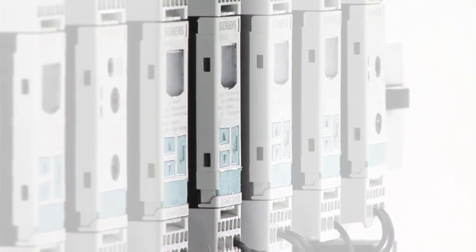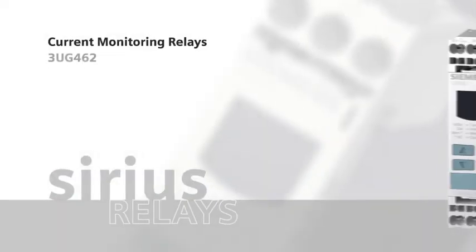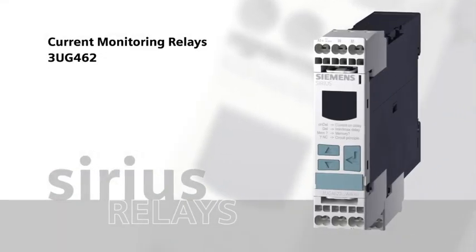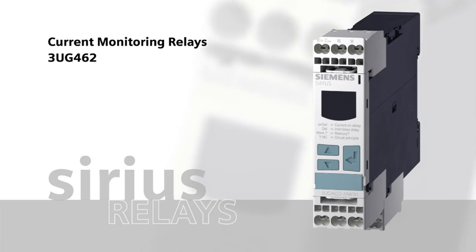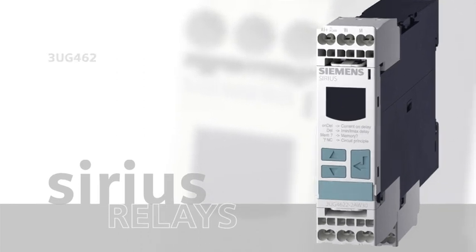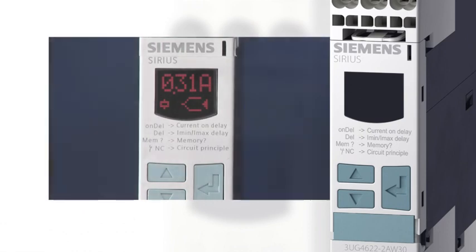The Sirius 3UG46-2 current monitoring relays monitor DC or AC currents in the range from 40 to 500 Hz. They are adjustable for upper or lower current limits or for window monitoring.